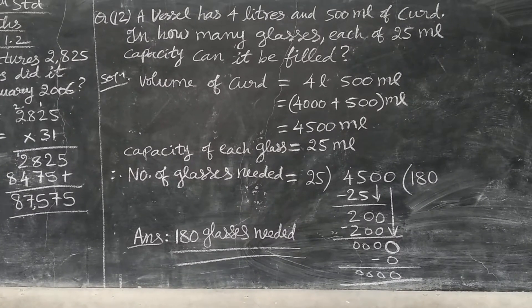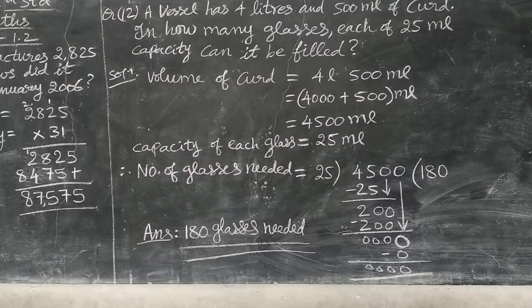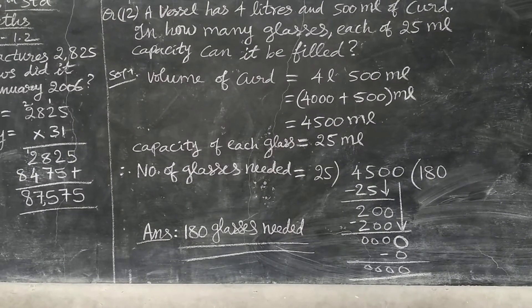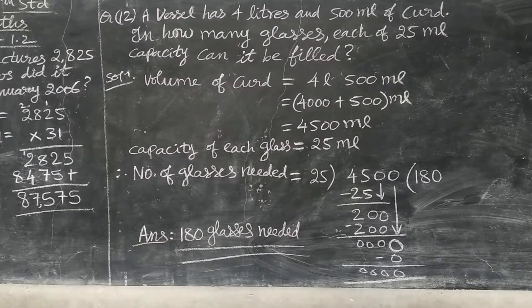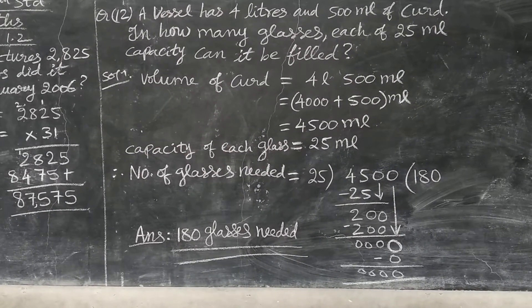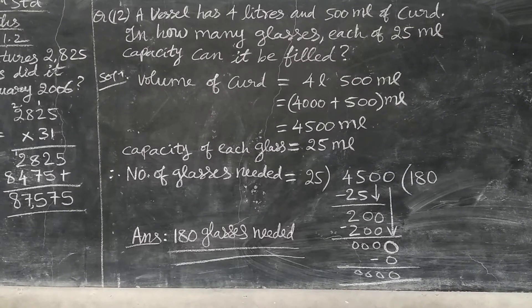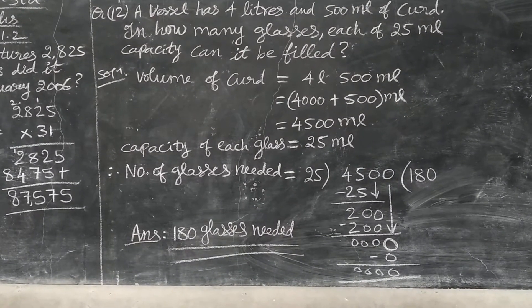What he has asked, how many glasses are needed? So last sentence you see, therefore number of glasses needed is equal to, total volume of curd is 4500 divided by capacity of glass, each glass is 25. When you divide this, you will get 180.